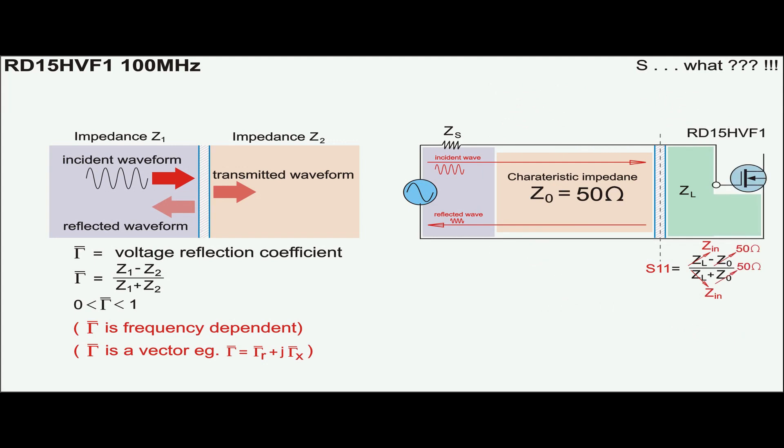In the case of the input of the RD15, the characteristic impedance is based on 50 ohm, and the gamma is now called S11, which will be matched to Z0 of 50 ohm. No more, no less.